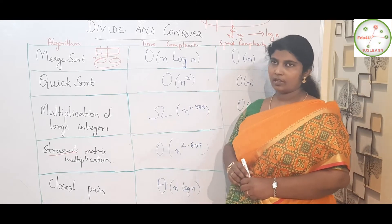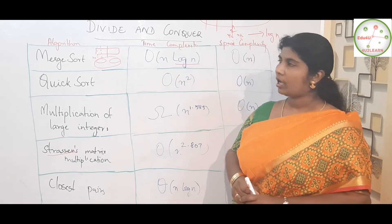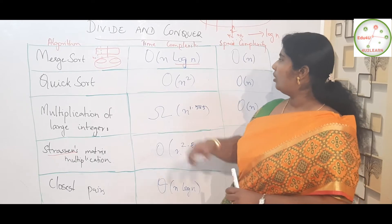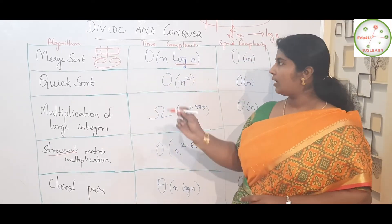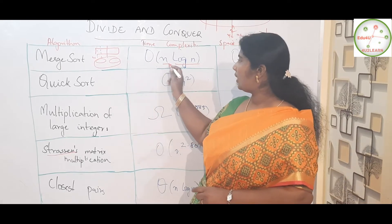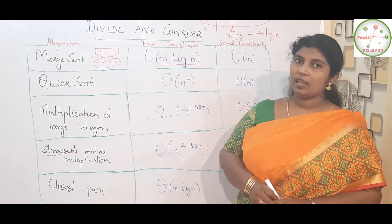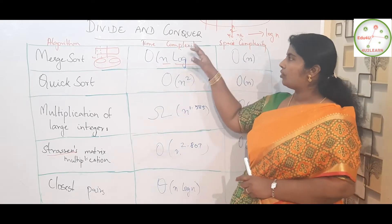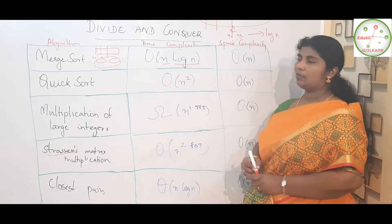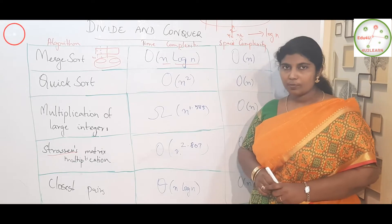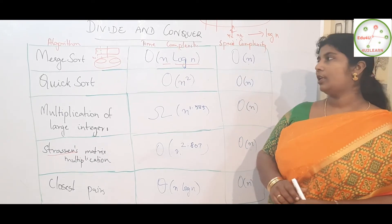The time complexity: the division phase is O(log n), and since comparison happens across n elements at each level, the overall time complexity is O(n log n). For space complexity, however much is the input it needs to be stored, so the space complexity is O(n).